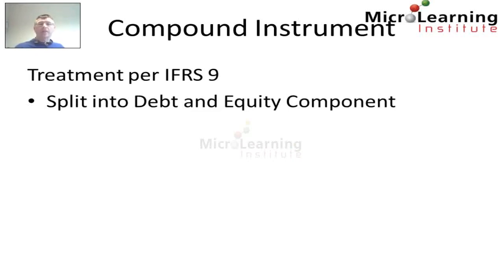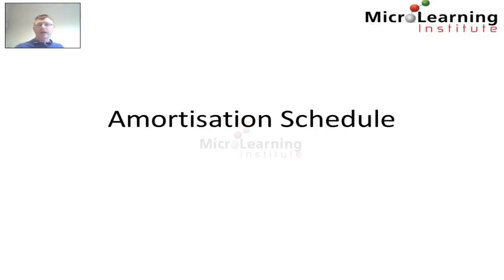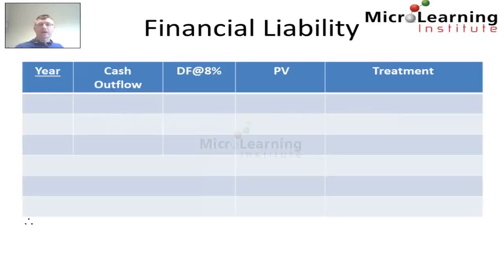This is a compound instrument and IFRS 9 recommends the treatment here that we split this compound instrument into both its debt and equity components. In order to look at the debt component we must prepare an amortization schedule. For each period we look at what is the cash outflow that PingWay will pay in respect of this financial liability, by how much must we discount that — at the market rate of 8% — and consequently what is the present value of this future cash flow, and ultimately how do we treat it in the income statement and on the statement of financial position.